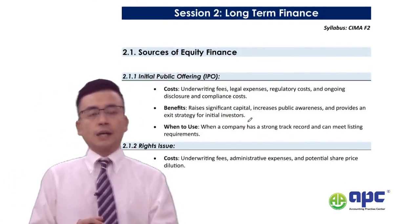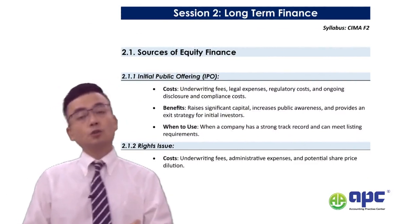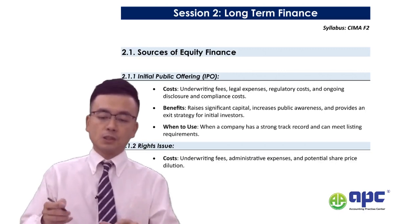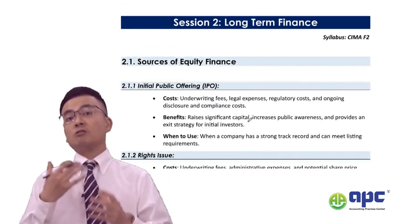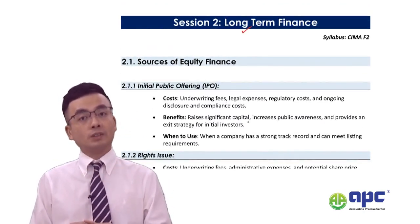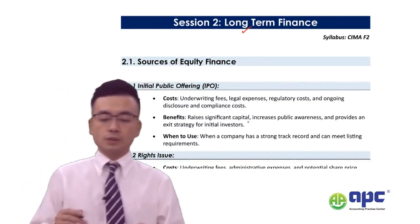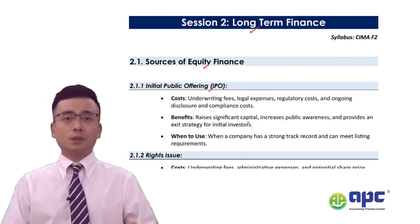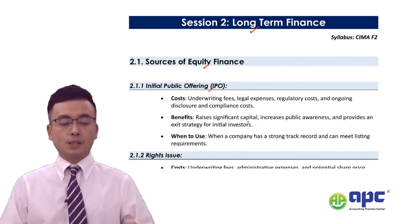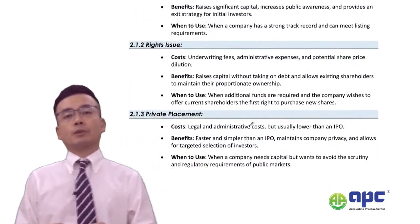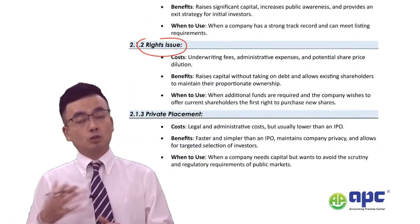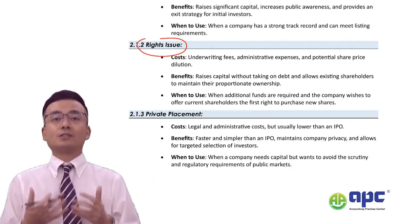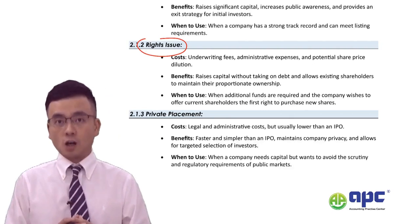Section 2 in Core Activity B covers long-term finance — where your money comes from for periods repayable in more than one year. This includes equity finance using an IPO (initial public offering). However, if the company is already publicly listed, it would more likely issue shares through rights issues — selling additional shares at discounted prices to existing shareholders.